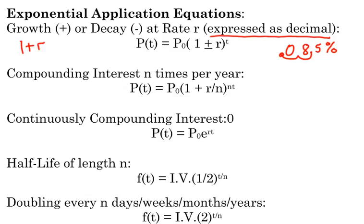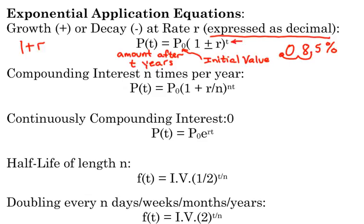Slightly different notation here: p(t) is still representing the amount after a certain amount of time — after t years — that's the left side. P-sub-0 is just another way to represent your initial value. The reason they use P here is it typically refers to principal, which is how much you invest. T must be in years.